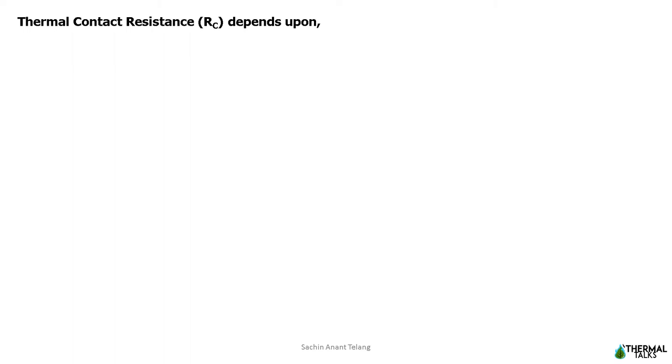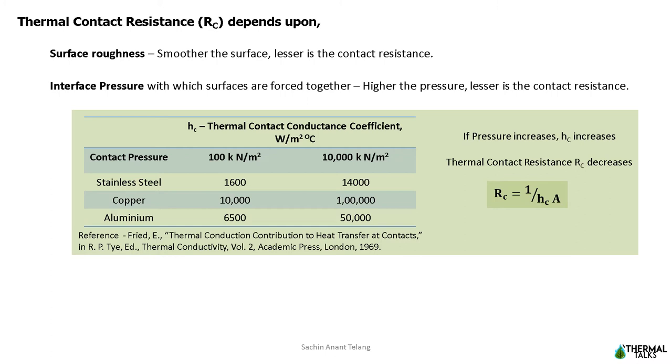Now, let us see which all factors affect thermal contact resistance. To begin with, the whole concept of contact resistance is due to presence of rough surfaces. Hence, smoother the surface, lesser is the contact resistance. Second, interface pressure with which surfaces are forced together. As you can see from the table below, as contact pressure increases, hc value increases, but thermal contact resistance rc decreases. The situation becomes more complex when two surfaces are joined by bolts, screws, or rivets, since the interface pressure in this case is non-uniform.